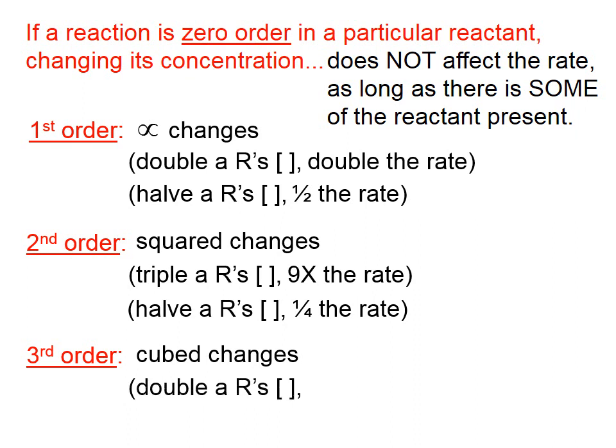Which means if you double a reactant's concentration, the rate would increase by double cubed, which is a factor of 8.